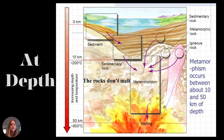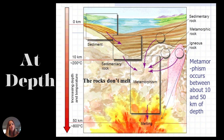Looking at depth, we have the 10 to 50 kilometers range. As you approach 50 kilometers, things start to melt and we're looking at igneous rocks. In the 10 to 50 kilometer range, that's where metamorphism is occurring. Above 10 kilometers, we're still just seeing sedimentary processes where things are being compacted and cemented together into sedimentary rocks.